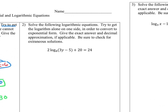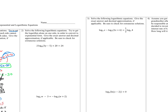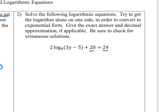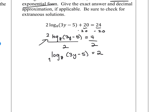Now let's solve these log equations. We had type 1 and type 2: we're either getting the logs alone on one side, or making it so we have one log equal to another log. Looking at number 2, because 20 and 24 don't have logs on them, this is the type where we convert to exponential form. So first isolate the log: subtract 20 from both sides to get 2 log base 8 of (3y minus 5) equals 4. Divide by 2 to get log base 8 of (3y minus 5) equals 2. The base is 8, and we're asking what power gives us (3y minus 5) — and we have 2 written there.